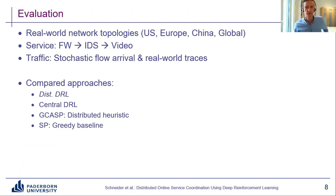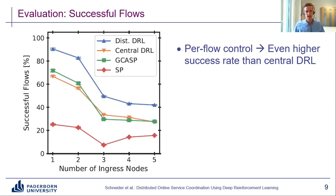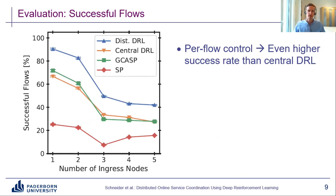We evaluated our approach on a set of real-world network topologies, stochastic flow arrival patterns, and real-world traces. We compared our distributed DRL approach against a centralized DRL approach, a distributed heuristic, and a greedy baseline. The main objective was to maximize the amount of successful flows, shown on the vertical axis. For increasing load, the success rate goes down, but our distributed approach has significantly better results than all other approaches. Notably, it is even better than the centralized DRL approach, because the centralized approach has observation delay due to monitoring overhead and can only make coarse-grained decisions. Our distributed approach gets up-to-date local information and makes fast, fine-grained local decisions, achieving higher success rates.